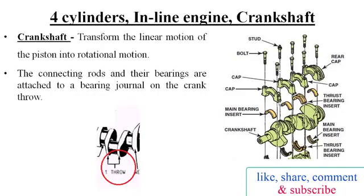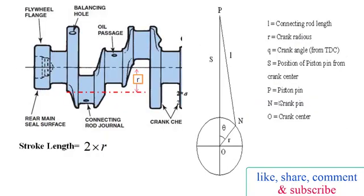The crank throw is offset from the crankshaft center line. The distance between the center line of the con rod bearing journal and the center line of the crankshaft main bearing journal — multiplying this distance by two gives the engine stroke. The combustion force is applied to the crank throw to produce the turning effort or torque which rotates the crankshaft.